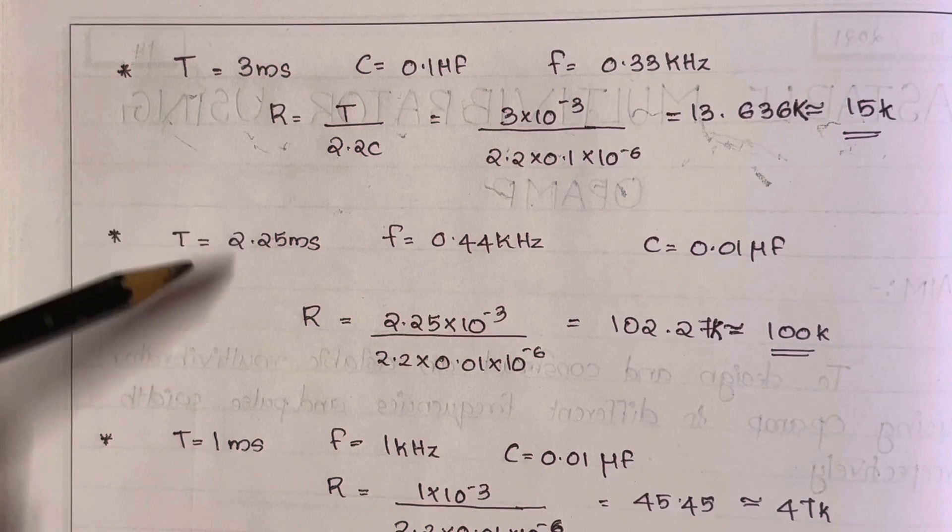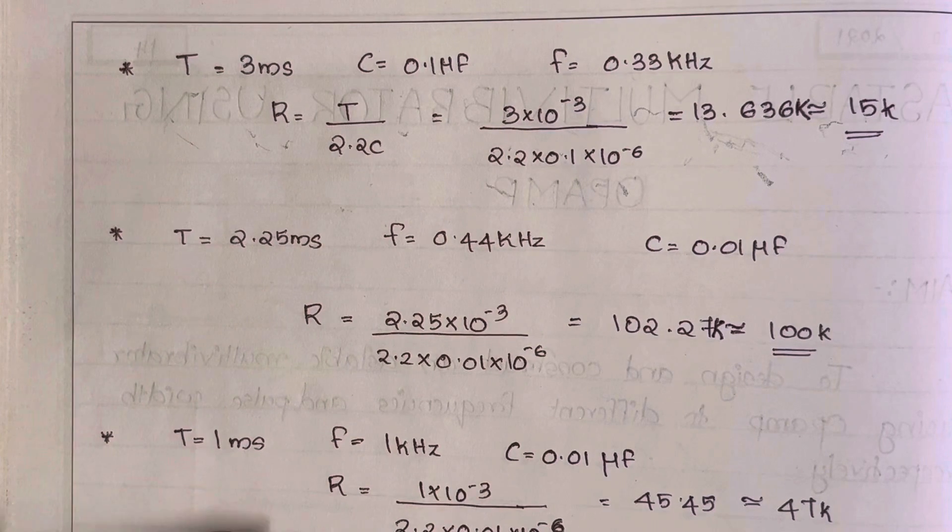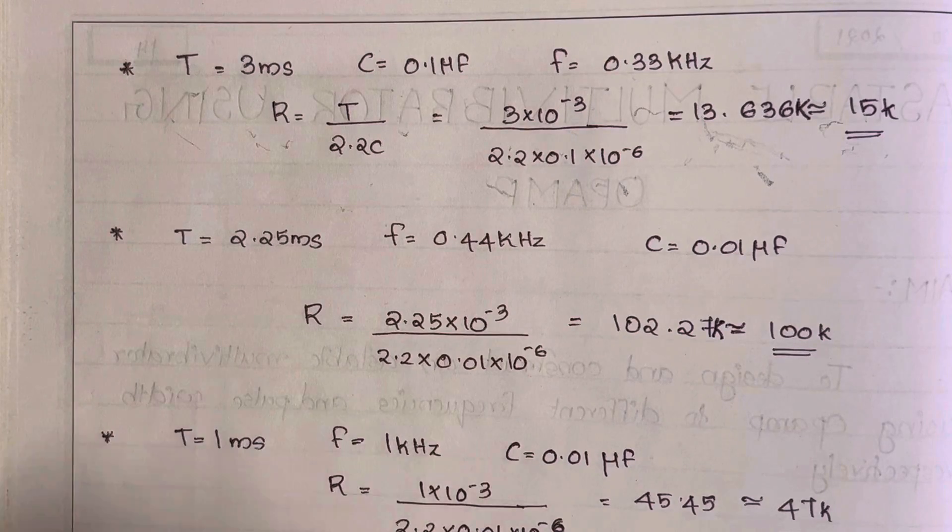You can try other values of T as 2.25, or T equals 1 millisecond. Whatever values are given, you can design the circuit for the given values of T and C.